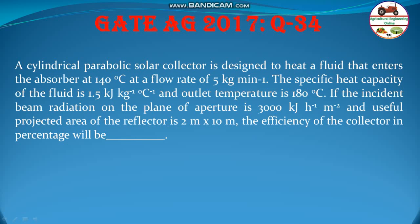If the incident beam radiation on the plane of aperture is 3000 kilojoule per hour per meter square and useful projected area of the reflector is 2 meter by 10 meter, the efficiency of the collector in percentage will be?